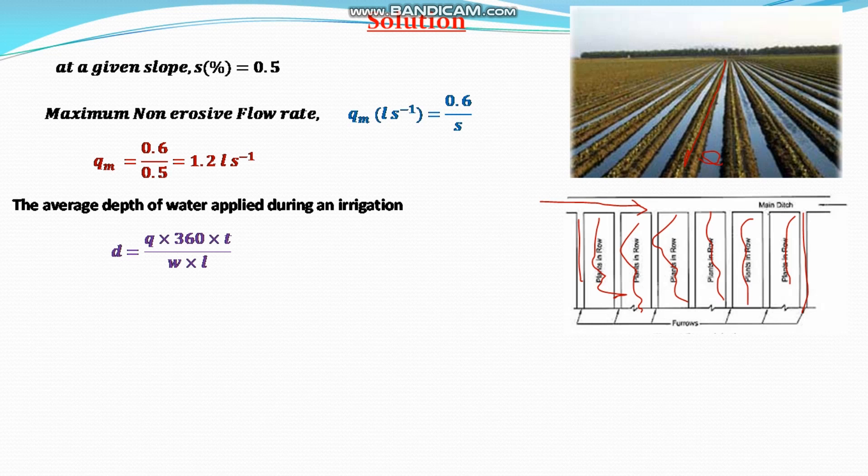q is 1.2 liter per second, t is one hour for first hour, w is 0.9 meter, and l is 120 meter. The first one hour depth of applied water, d1, is multiplying 1.2 × 360 × 1 divided by 0.9 × 120, that is 4 centimeter. So in the first hour of irrigation, 4 centimeter of water is applied in the furrow.